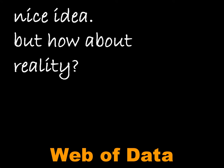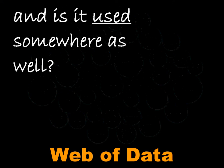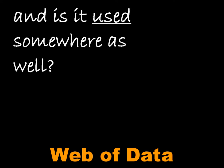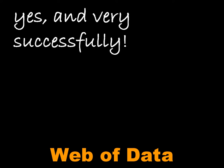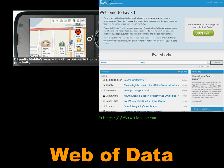Okay, nice idea. But how about reality? This is reality. It started with a couple of datasets that offered linked data in early 2007. The so-called Linked Data Cloud currently offers over 2 billion RDF triples and around 3 million links in more than 30 datasets — still growing. And it's used somewhere as well, yes, and very successfully. There are a couple of applications built on top of the linked datasets.